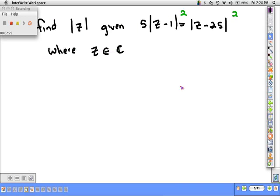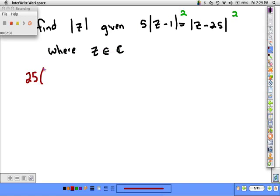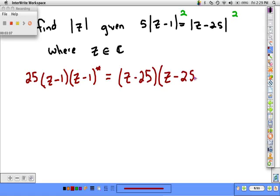If I want to find the modulus of z given this information, in order to get rid of the absolute values from both sides, we need to square both sides. We'll have 25 times the modulus of z minus 1 squared, which is the same as z minus 1 times z minus 1 times that conjugate. On the other side, we'll have z minus 25 times the conjugate of z minus 25.